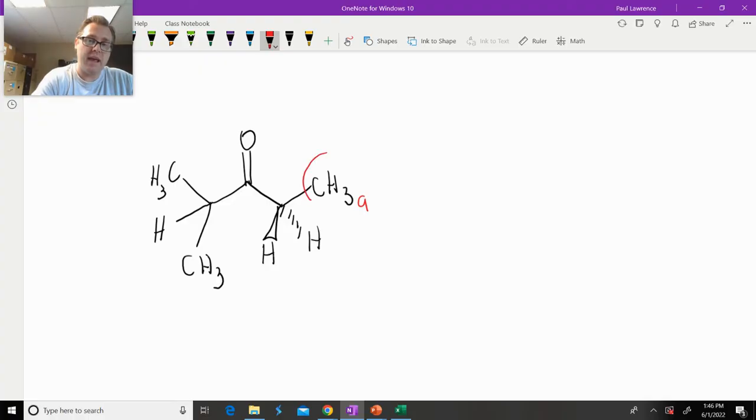Now, signal A or protons A are going to be chemically distinct from those two. So we can say those two are definitely B because A and B are different. Different connectivity, different chemical environment. If you don't trust yourself or don't believe me, then do the replacement test and you will see that they are chemically distinct.